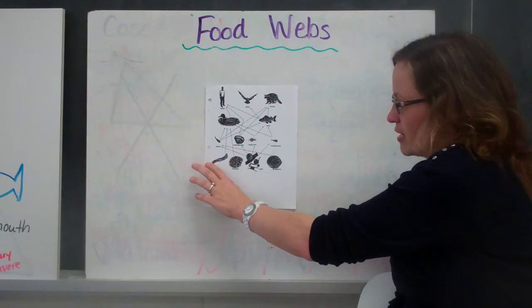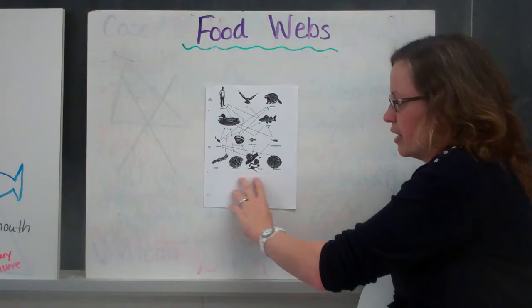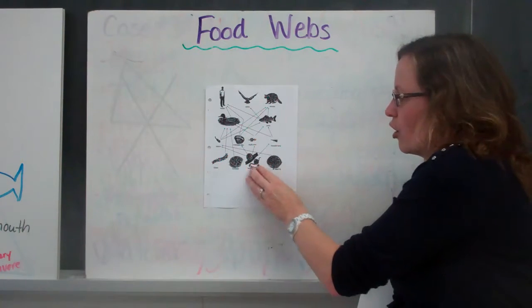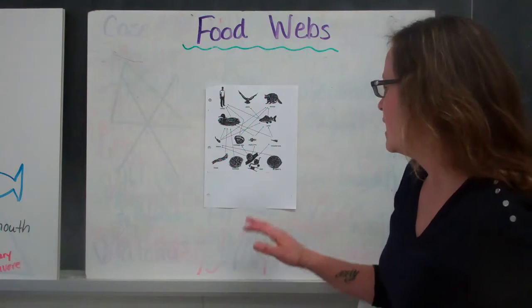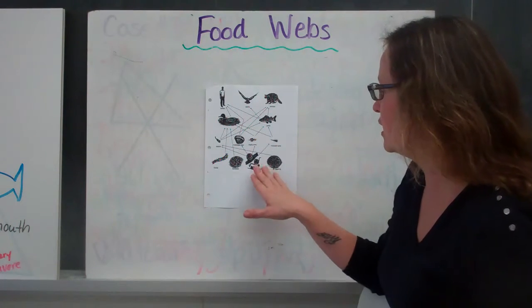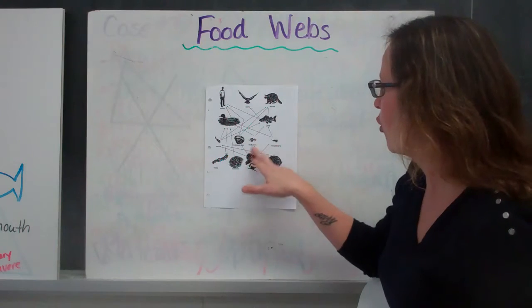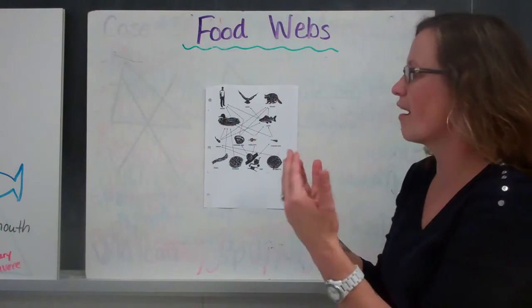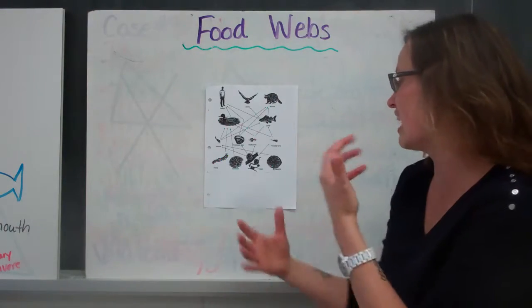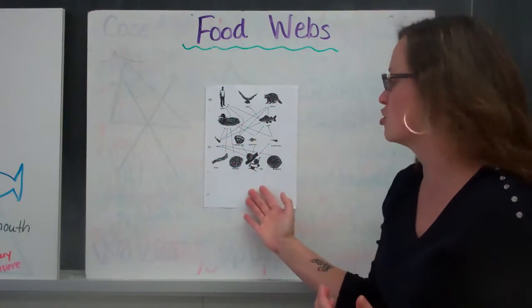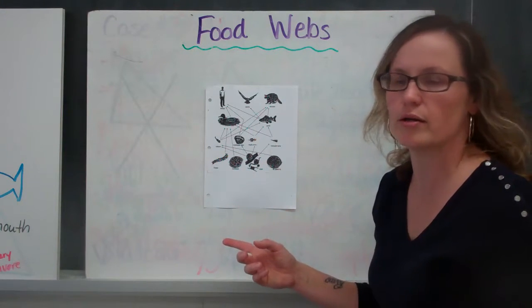And it demonstrates how we have our producers at the bottom here. And then it shows the energy flow and how it goes from organism to organism. And you can see that algae is consumed by four different organisms. So it's not just a simple relationship of one consumer and one producer. You can have more than one consumer consuming one producer.